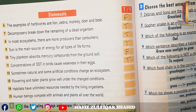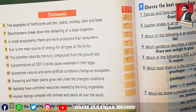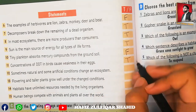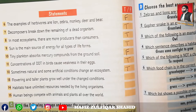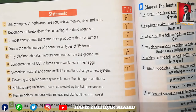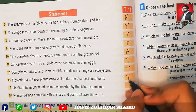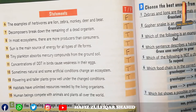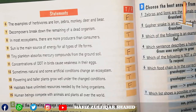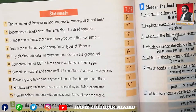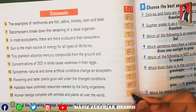Number eleven: concentration of DDT in birds causes weakness in their eggs — true. Number twelve: sometimes natural and sometimes artificial conditions change in an ecosystem, and some plants grow well under changed conditions. Number fourteen: human beings compete with animals and plants all over the world — true.